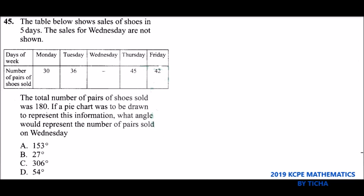So we have 30 on Monday, we had 36, so that will give us 66. We add 45 and that will give us 111. And then finally we have 42, and that will give us 153.